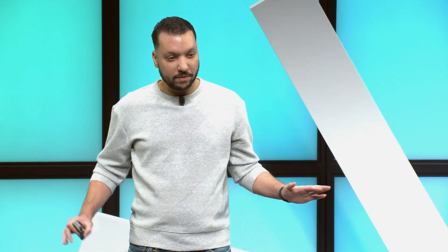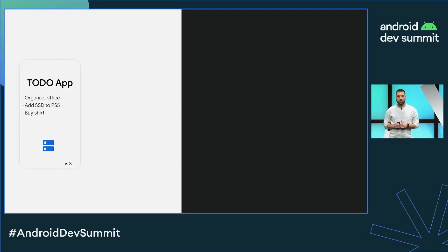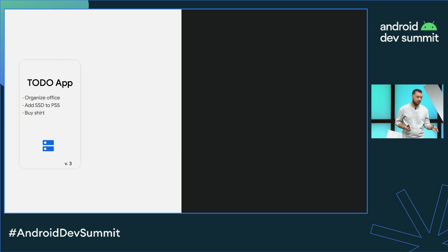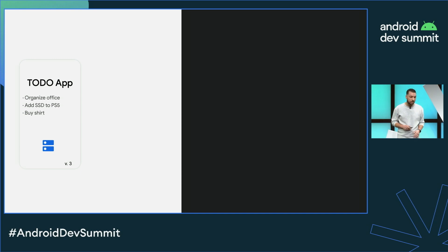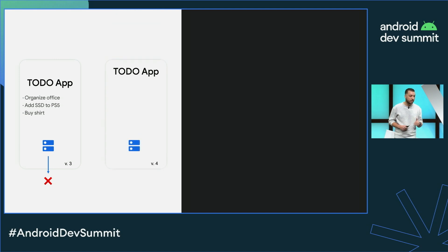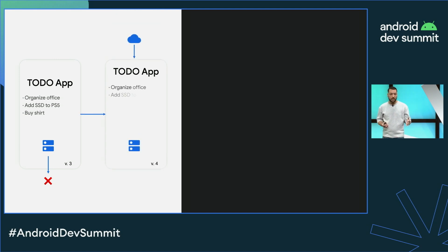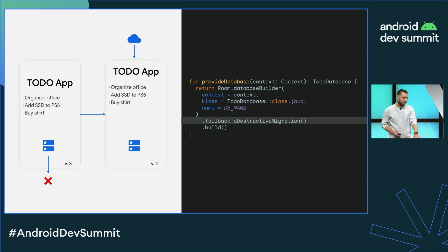Not every database needs to be migrated. If the data on your app is some sort of cache, or if the source of truth is your server, then there might not be a reason to perform a database migration. For these cases, Room can simply recreate the database when the app gets updated, and you can enable this via the fallback-to-destructive migration API in the builder.